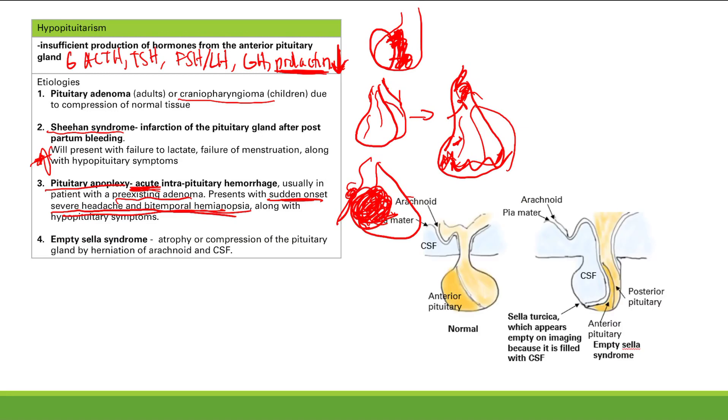Finally, we get empty sella syndrome. So this is caused by atrophy or compression of the pituitary gland by herniation of the arachnoid and the CSF. So this is how it normally is. And this is like bone and stuff. But this is our sella turcica. This whole area here is our sella turcica. That's where our pituitary glands are housed.